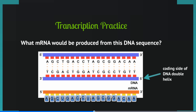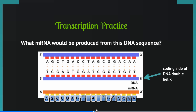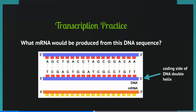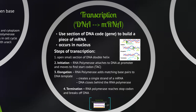Now you can see the answer — hopefully this is what you came up with. You just did transcription! Notice that at the end we have a completely intact piece of DNA as well as a new piece of messenger RNA. You may also notice that the non-coding side of the DNA looks a lot like the messenger RNA, except wherever there is a thymine we have a uracil instead. And this is transcription.